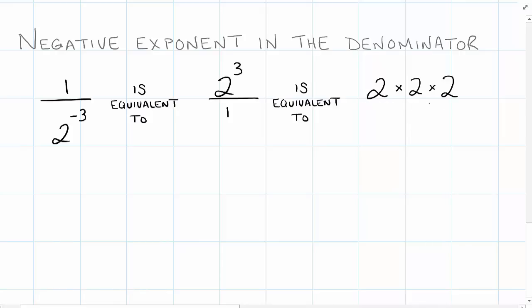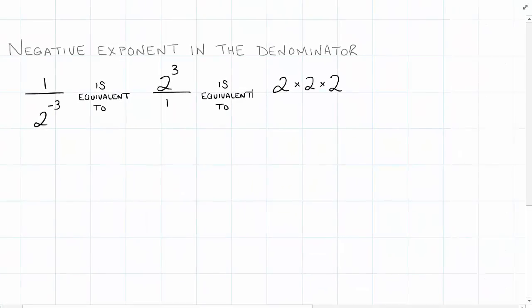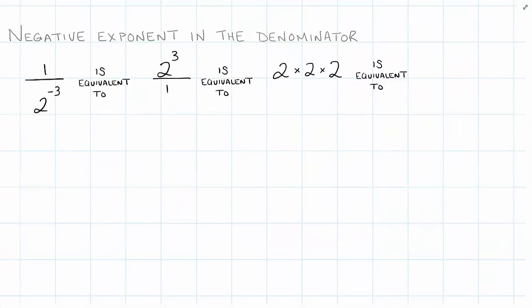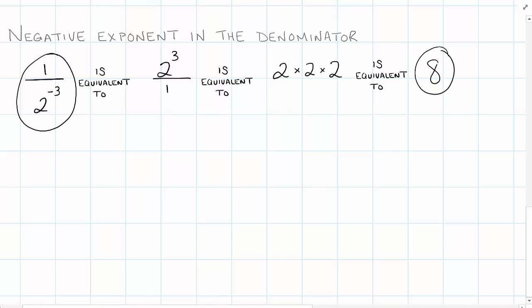That's going to be equivalent to the multiplication problem of two times two times two over one — I don't have to put it over one if I don't want to. Finally, two times two is four, times two is eight. So we end up with the whole number eight as our answer. What we started with was a fraction that had a denominator with a negative exponent, and we ended up with eight.